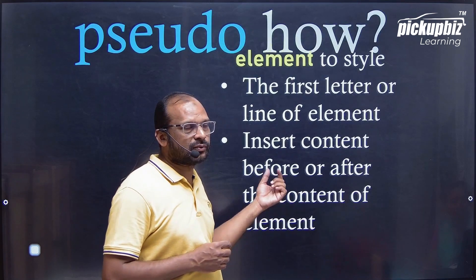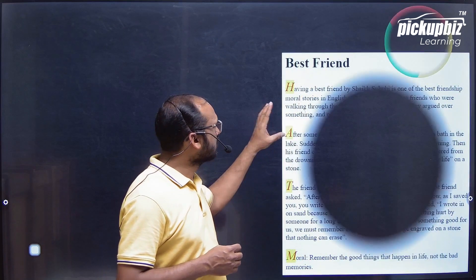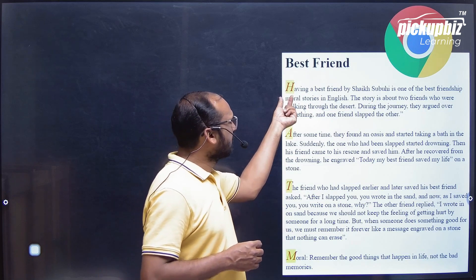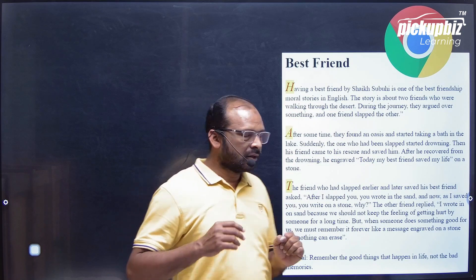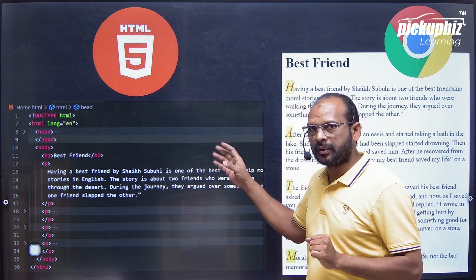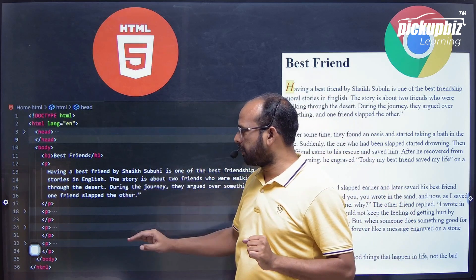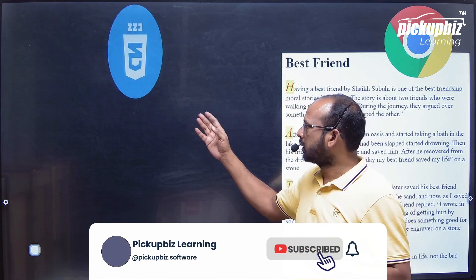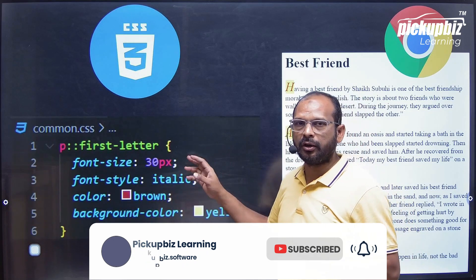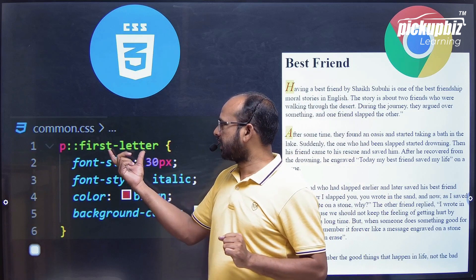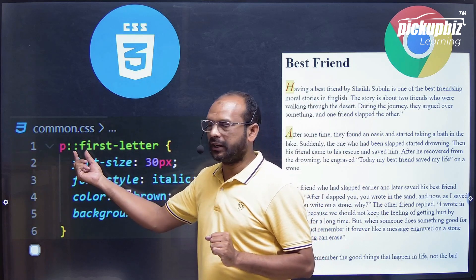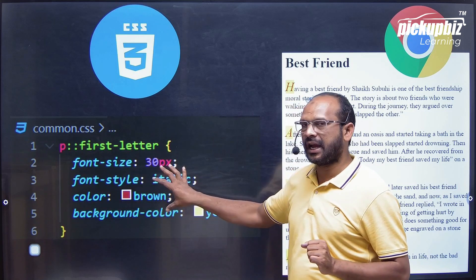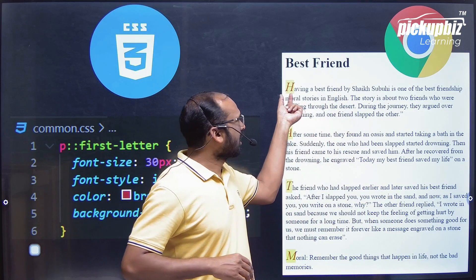Let's have one example of a pseudo element. In this example, we are going to have one story with multiple paragraphs. Each paragraph's first letter I want in a specified style. In order to achieve this, we implement it in HTML with multiple paragraphs. To style the first letter, we implement it in CSS using the pseudo element p::first-letter — the double colon stands for the pseudo element. Here I can provide the style which I want reflected on the paragraph's first letter.